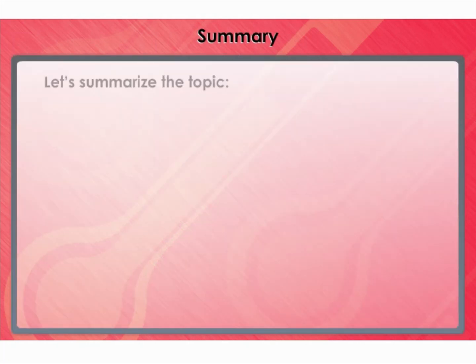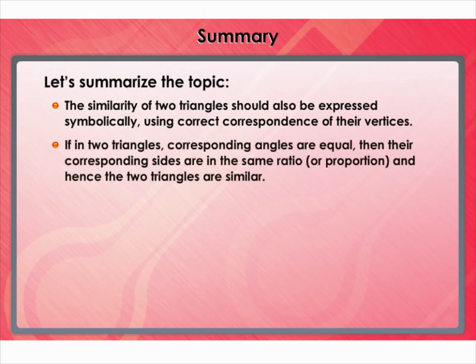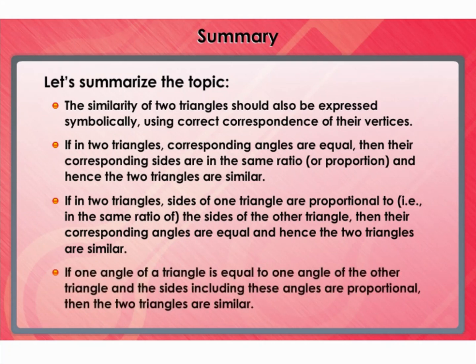Summary: The similarity of two triangles should be expressed symbolically using correct correspondence of their vertices. If in two triangles corresponding angles are equal, then the corresponding sides are in the same ratio or proportion, and hence the two triangles are similar. If the sides of one triangle are proportional to the sides of the other triangle, then the corresponding angles are equal and hence the two triangles are similar. If one angle of a triangle is equal to one angle of the other triangle and the sides including these angles are proportional, then the two triangles are similar.